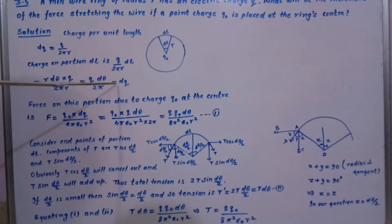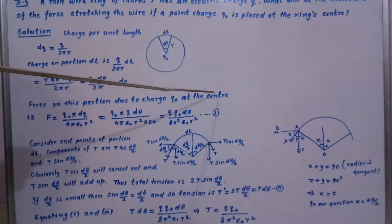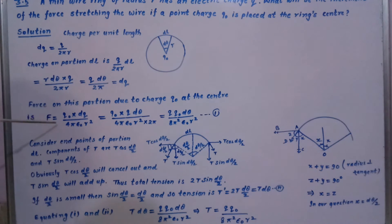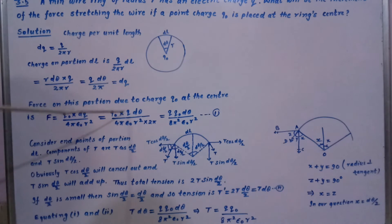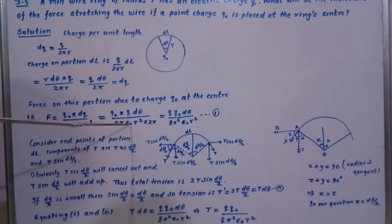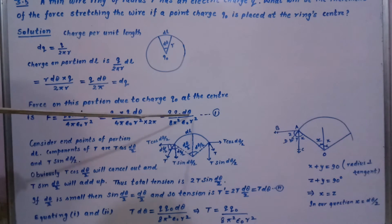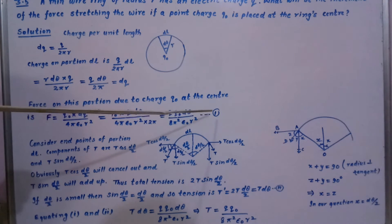We denote this as dQ. The force on this portion due to charge Q0 at the center is F = Q0 × dQ / (4π ε₀ R²). Substituting dQ = Q dθ / 2π, we get F = Q Q0 dθ / (8π² ε₀ R²). This is equation number 1.